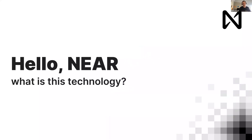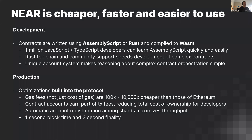So hello, what is this NEAR technology? NEAR is cheaper, faster, and easier to use for development and for production. Contracts are written in AssemblyScript or Rust — they compile to Wasm (WebAssembly). There are a million JavaScript and TypeScript developers out there, maybe including some of you, that can learn AssemblyScript in a matter of hours or days.